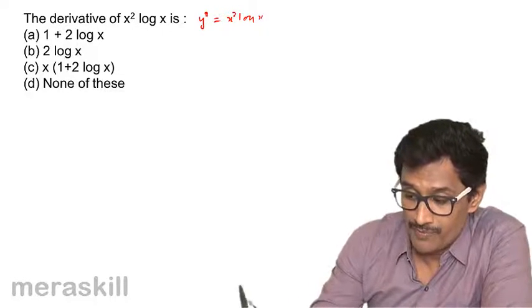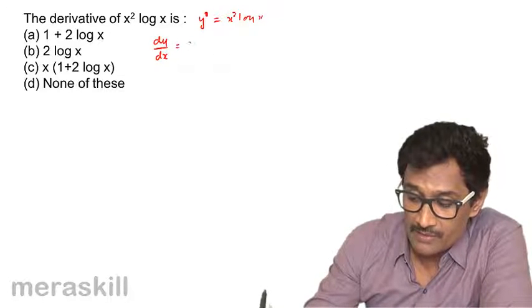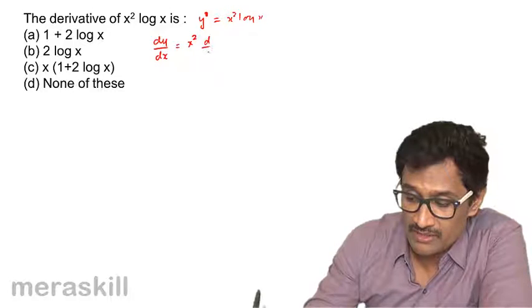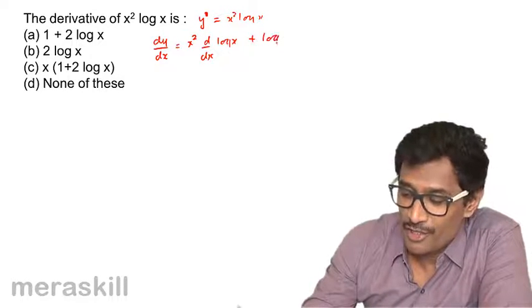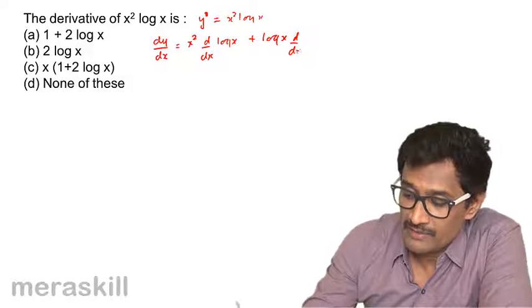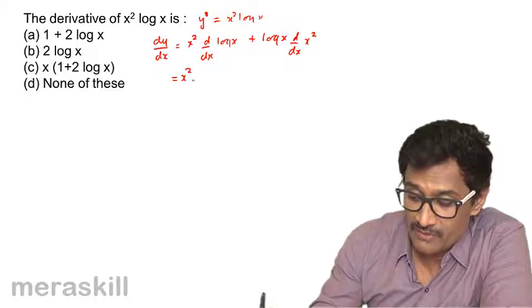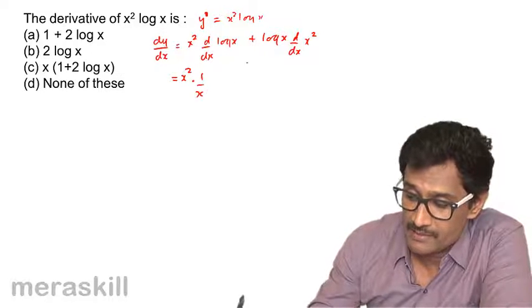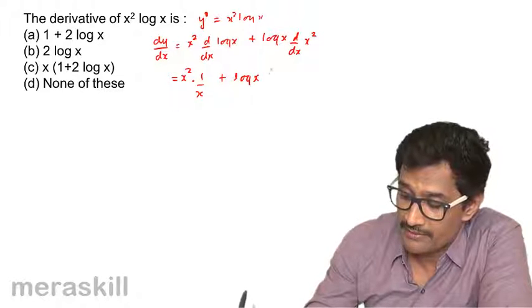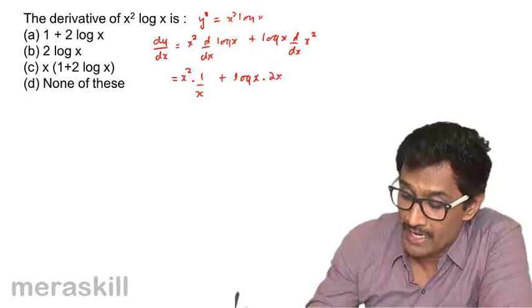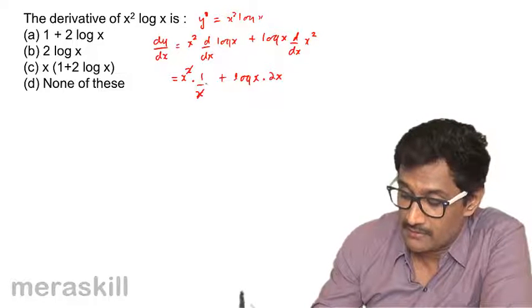So dy/dx is equal to x² into d/dx of log x plus log x into d/dx of x². This gives x² times 1/x plus log x times 2x raised to 2 minus 1.